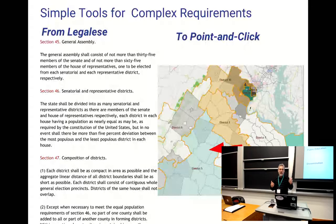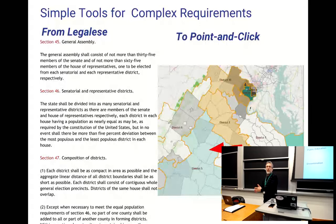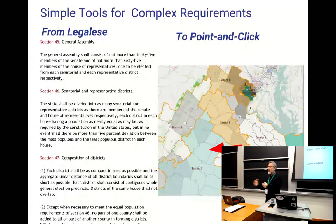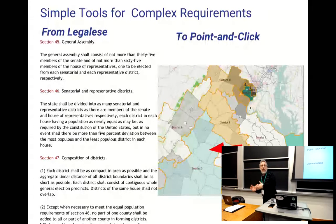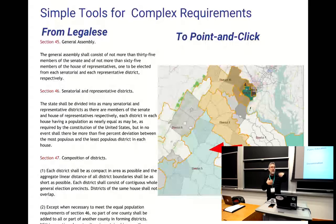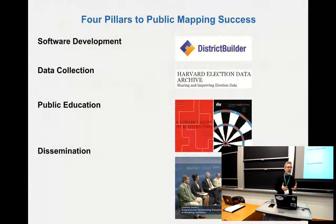This is not just a matter of software — software is a tool. Data is absolutely necessary. You can't have a legal plan without the official data. And you can't understand the consequences of a particular redistricting plan — which is a policy proposal in the form of a map — without access to a lot of other data like voter registration, which may not be part of the official redistricting data but is necessary to understand the consequences. Education is important too: people need to know that these services are available and that it's important to become engaged.